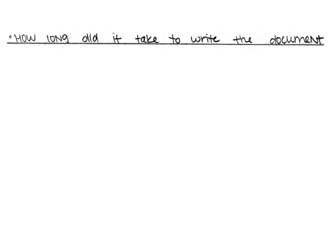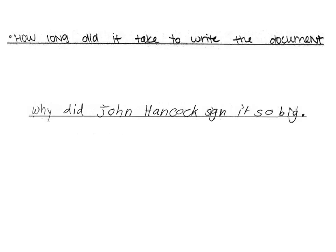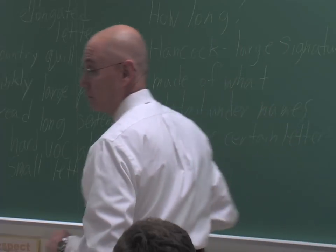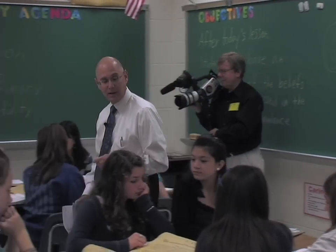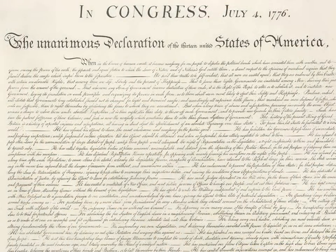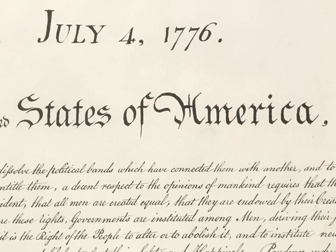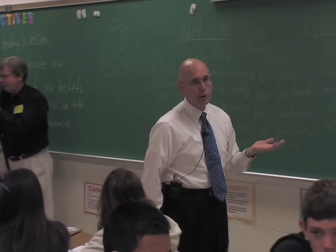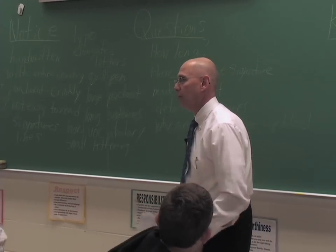How long did it take to write the whole thing? Why did John Hancock sign it so big? There are some letters in there that are capitalized and they're not at the beginning of the sentence. So why are certain letters capitalized? At the very top of the document where it says 'In Congress, July 4th, 1776,' below that it says 'the unanimous declaration of the 13 United States of America' — and 'States of America' is capitalized but 'United' is lower case. Why?